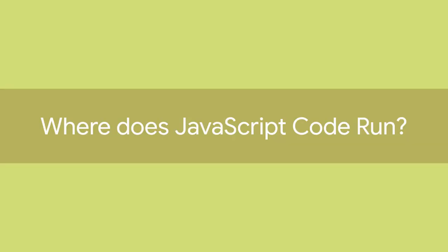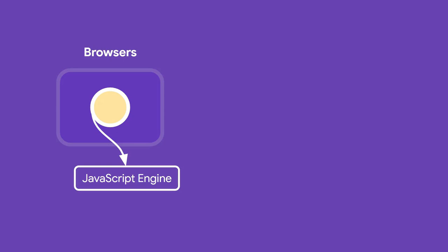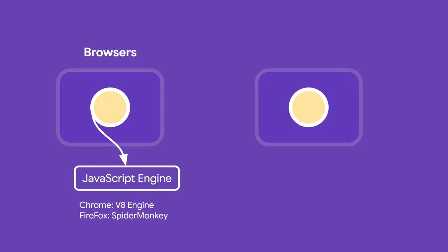The next question is: where does JavaScript code run? Initially, JavaScript was only designed to run in the browser. Every browser has a rendering engine which we call a JavaScript engine. For example, Chrome has the Chrome V8 engine, and Firefox has SpiderMonkey, which is responsible for executing JavaScript inside the browser. In 2009, an engineer called Ryan Dahl took the open source JavaScript engine from Chrome and embedded it inside a C++ program called Node.js. Now with Node.js, you can run JavaScript code without the browser. Overall, Node.js is a runtime environment for JavaScript where you can run code outside the browser.